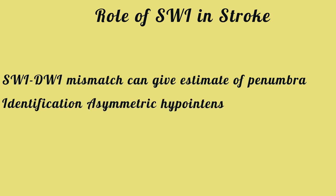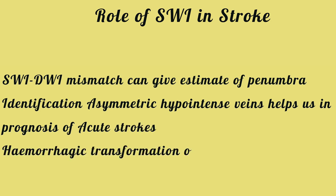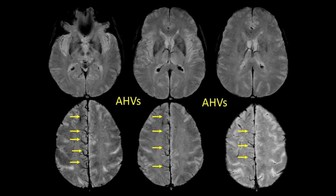By assessing susceptibility weighted and diffusion weighted images simultaneously, we can calculate the SWI-DWI mismatch, which can give an estimate of penumbra. Asymmetric hypointense veins help us in prognosticating acute stroke. SWI images also help us identify early hemorrhagic transformation and detect early luxury perfusion, which are bad prognostic indicators in acute ischemic stroke. The imminent sign of ischemia we initially overlooked was the presence of asymmetric hypointense veins on the right side.